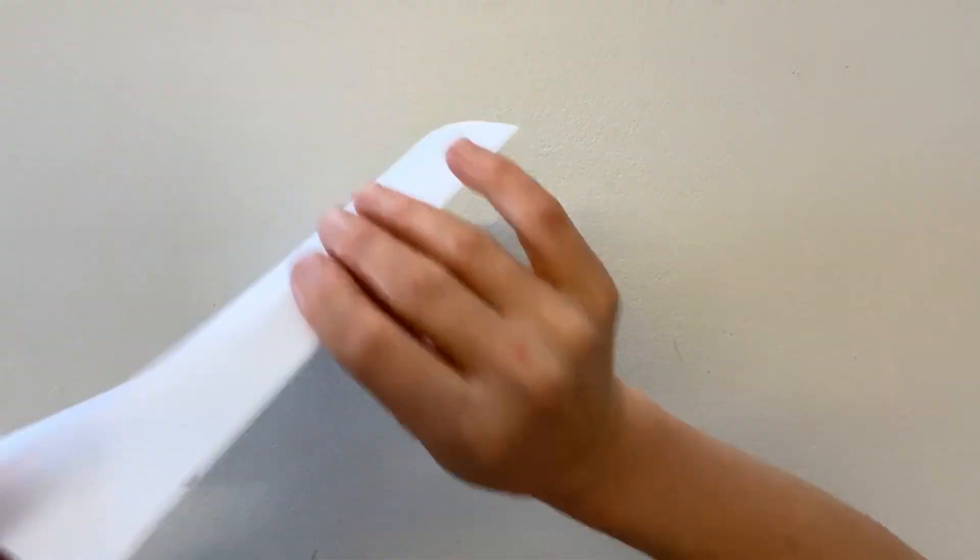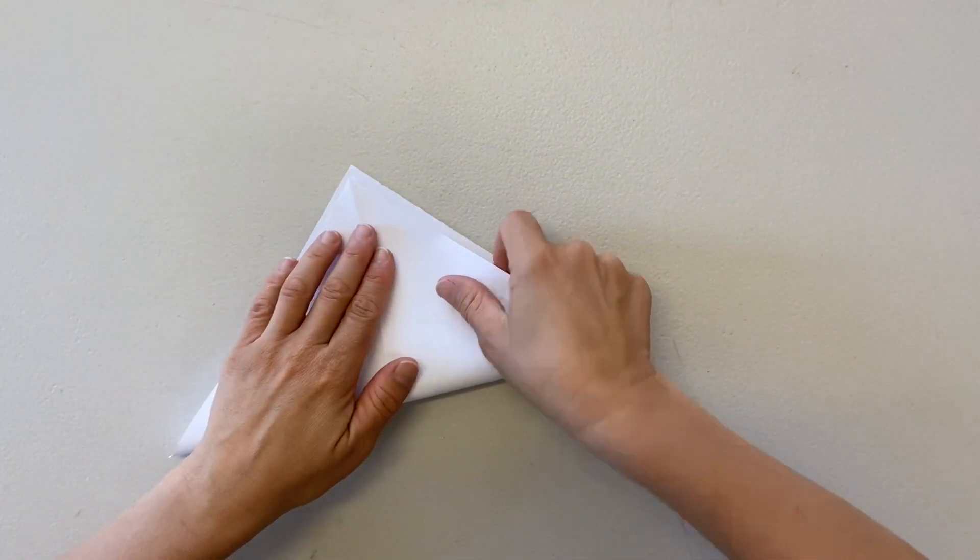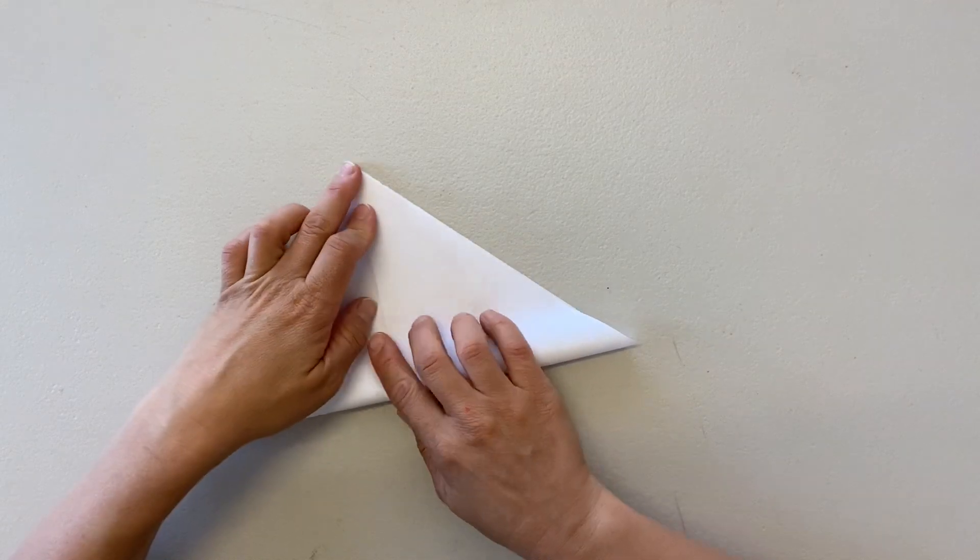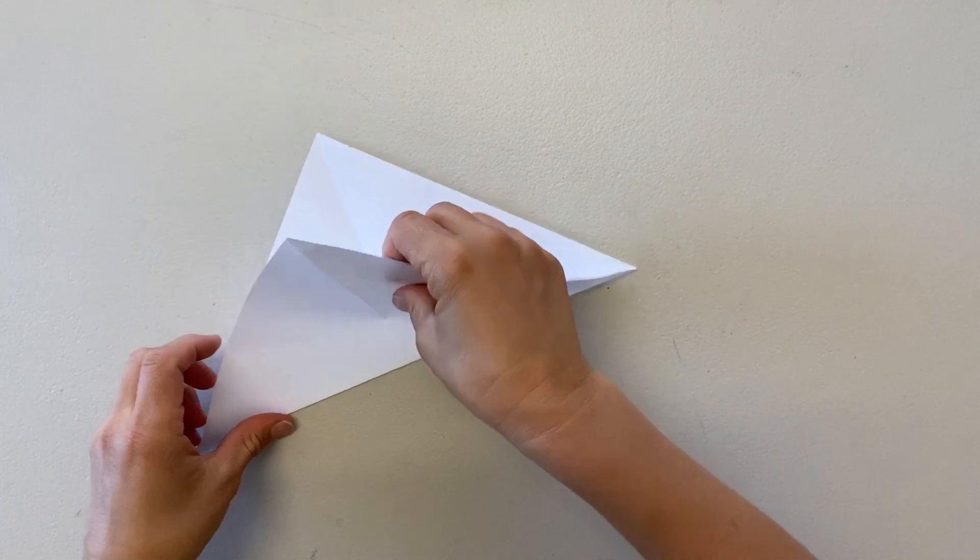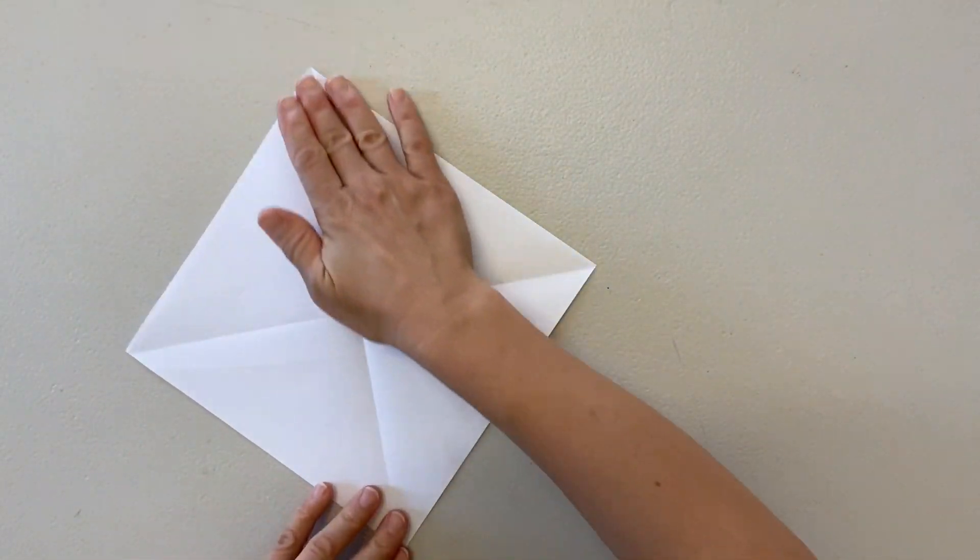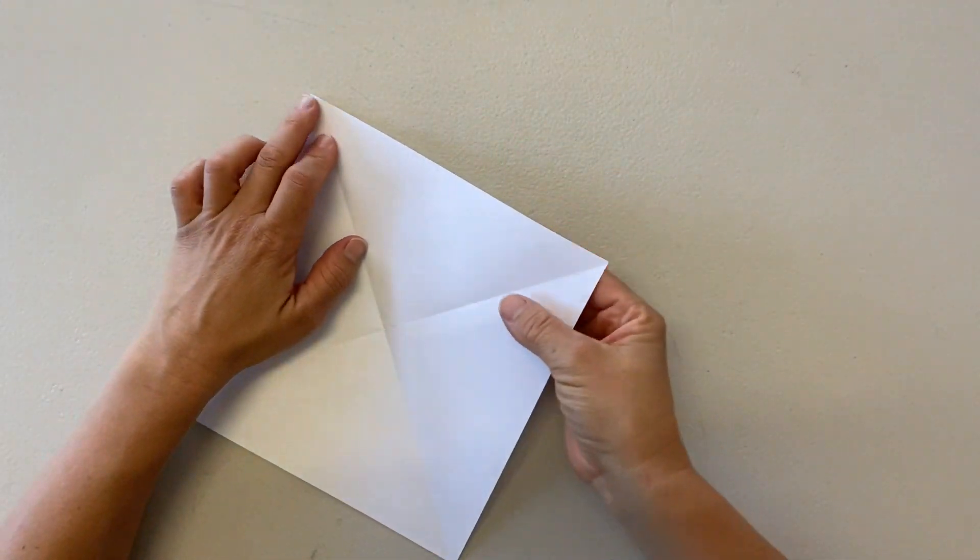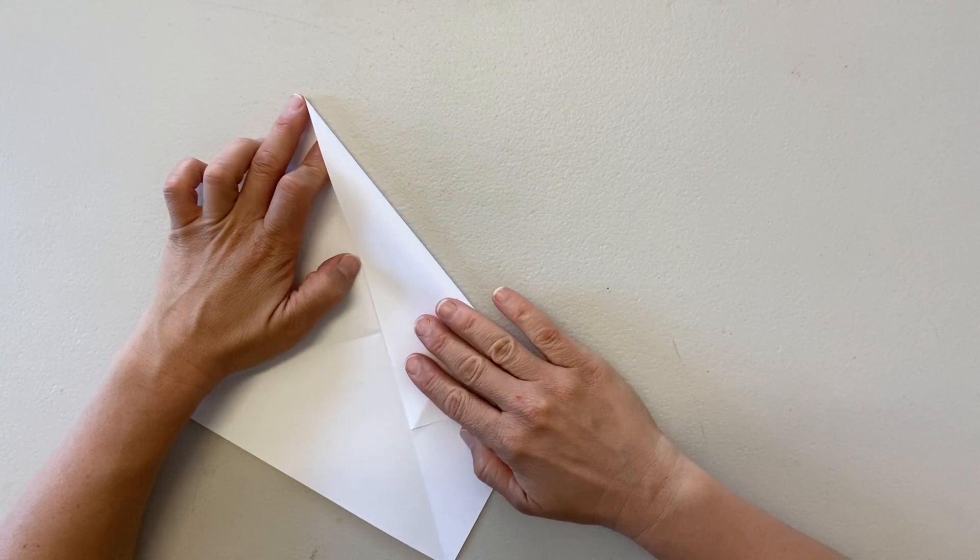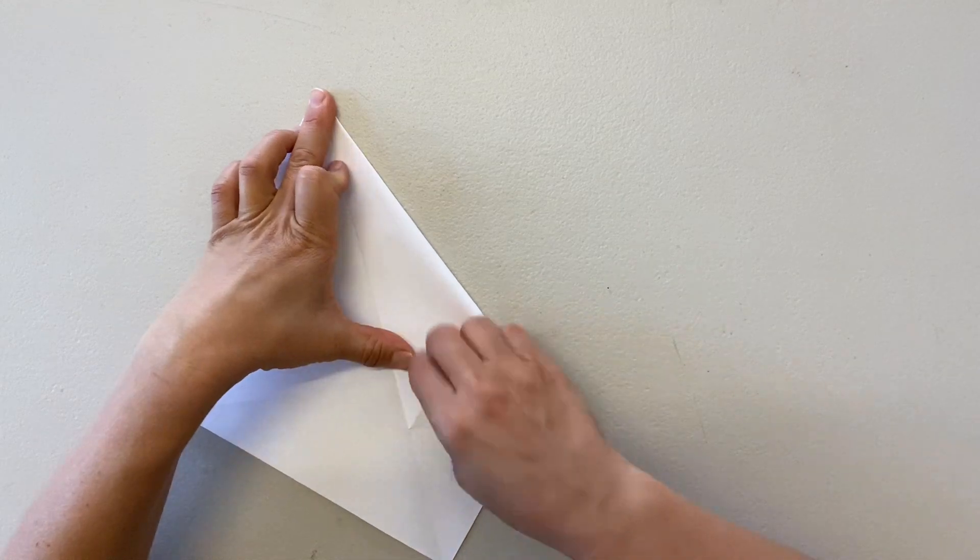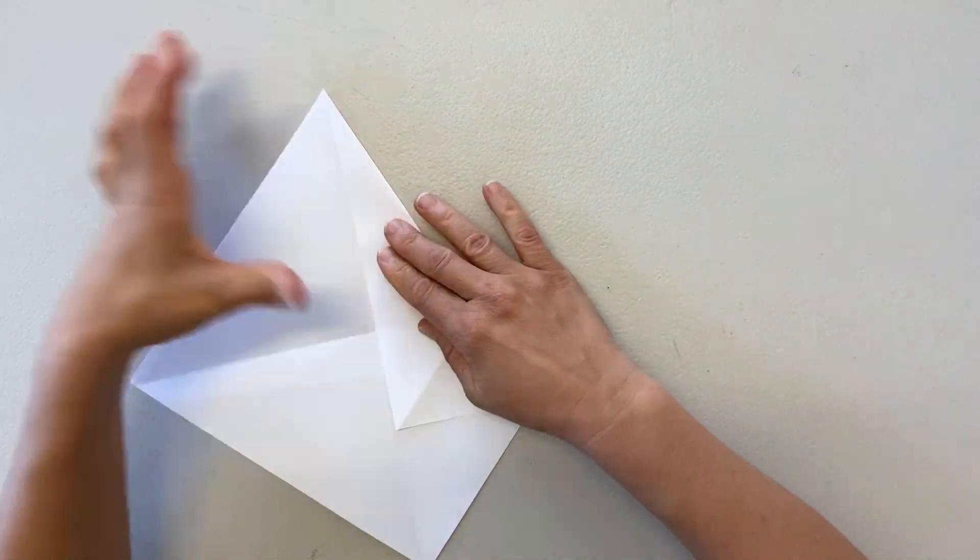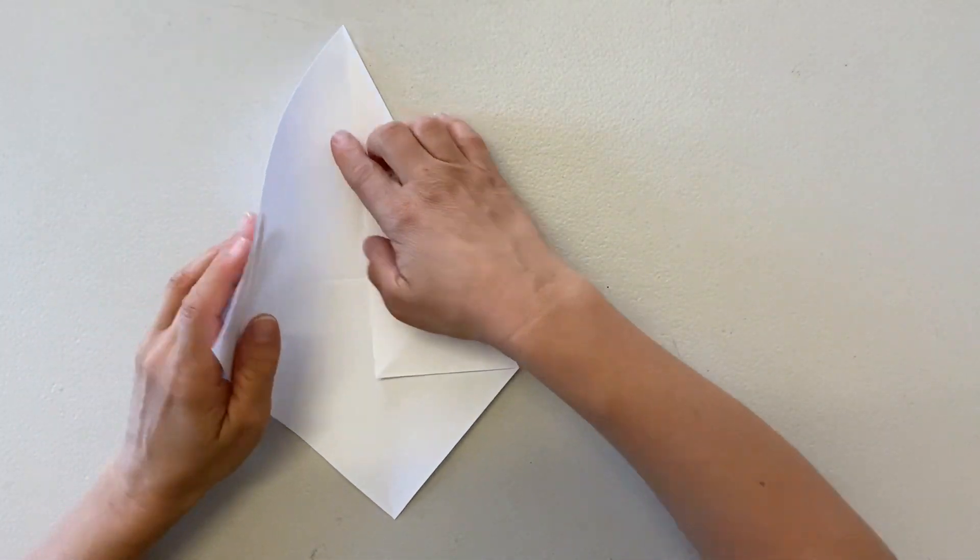We already have one diagonal line, so we're going to fold the other diagonal line and get our center point. Now fold one side point into the middle, lining the side edge up with the middle line. Do the same on the other side.